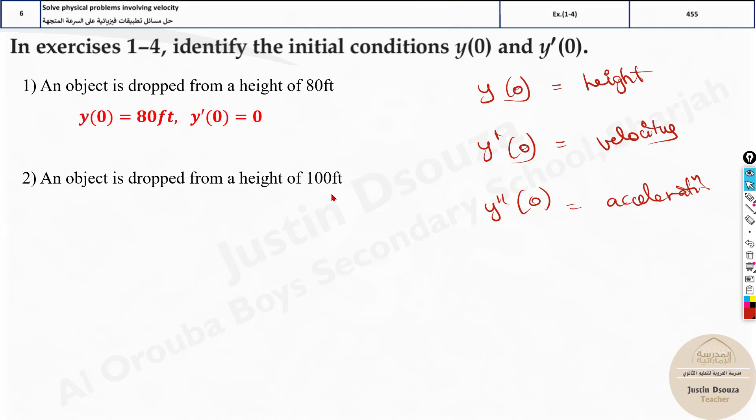What about over here? An object is dropped from a height of 100 feet. So the height is 100 feet, that is y of 0 is 100. The velocity is not mentioned, so it's 0.